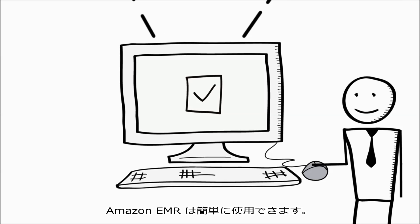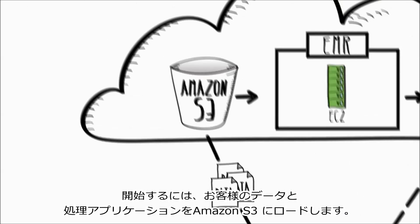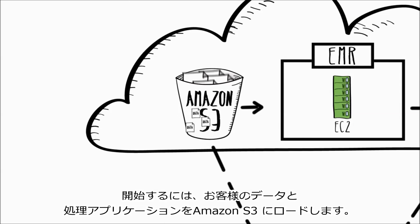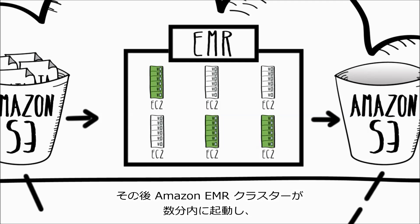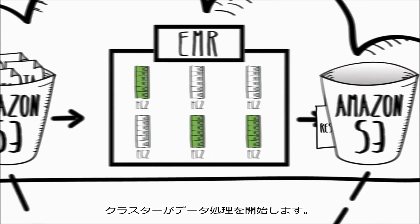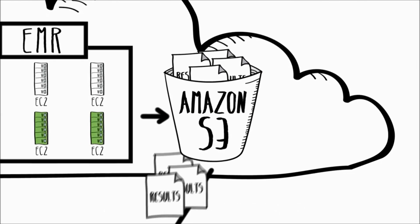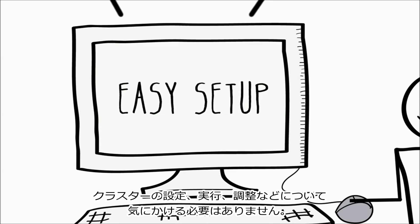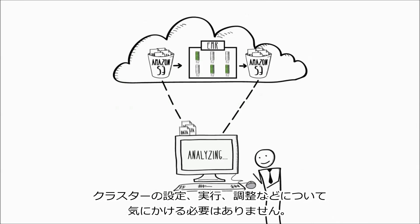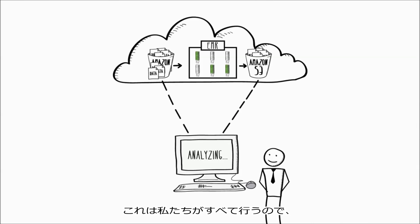Amazon EMR is easy to use. To get started, you can load your data and processing applications into Amazon S3. Then you can launch an Amazon EMR cluster in minutes, and the cluster starts processing your data. You don't need to worry about setting up, running, or tuning the clusters — we take care of that so you can focus on the analysis of your data.